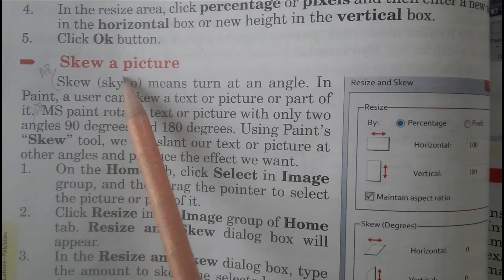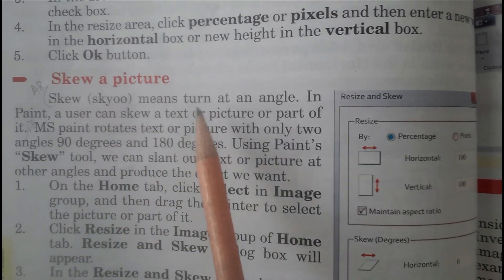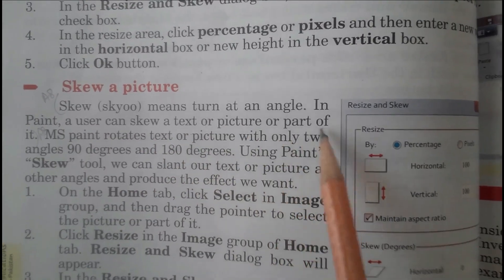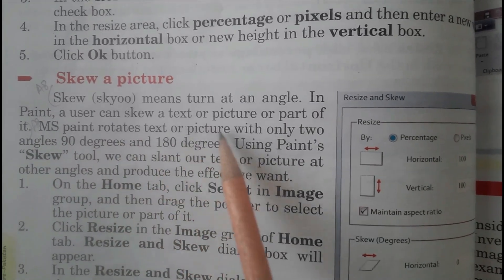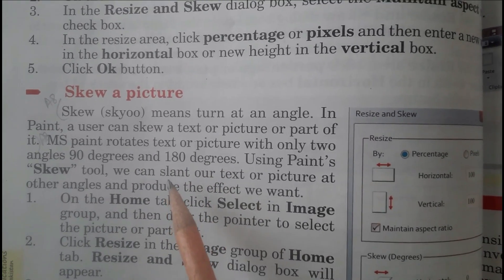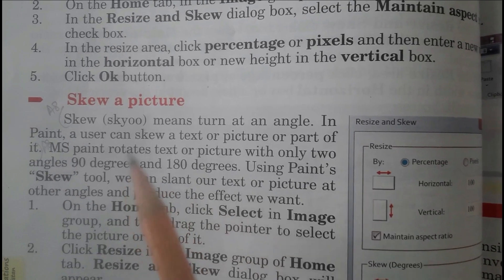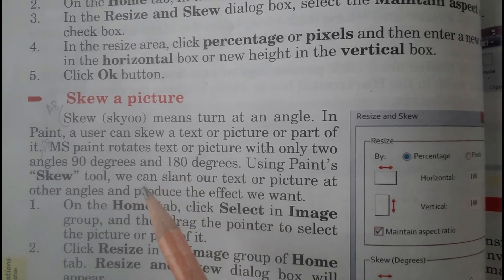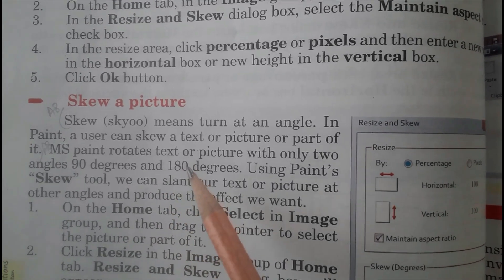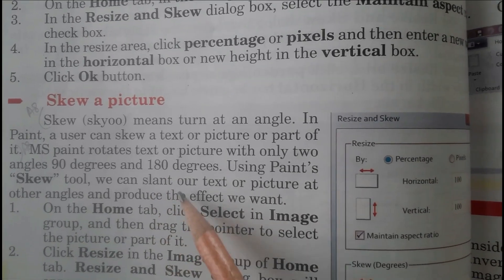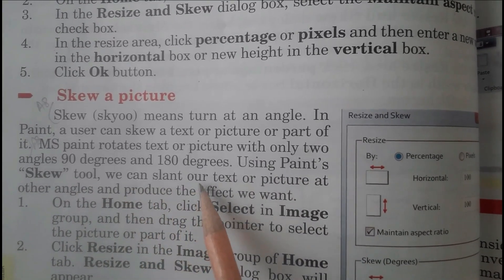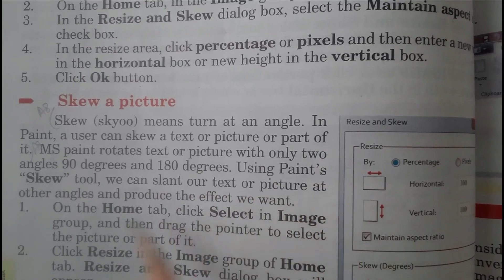The next topic is skewing a picture. Skew means to turn at an angle. In Paint, a user can skew text or a picture or part of it. MS Paint rotates text or picture with only two angles: 90 degrees and 180 degrees. Microsoft Paint provides the ability to skew a picture either vertically or horizontally using percentage parameters or angle values.